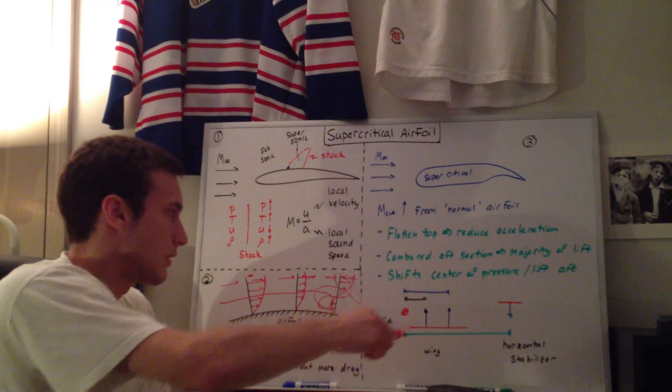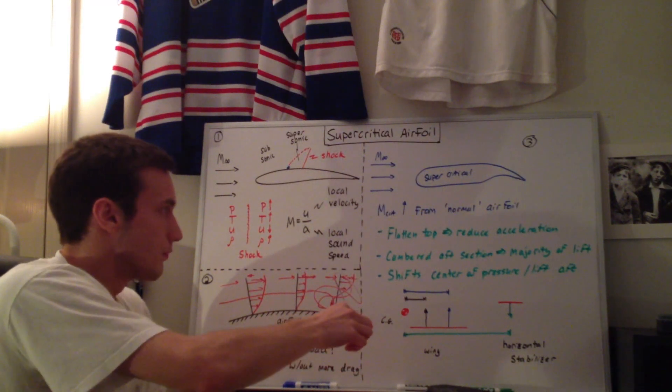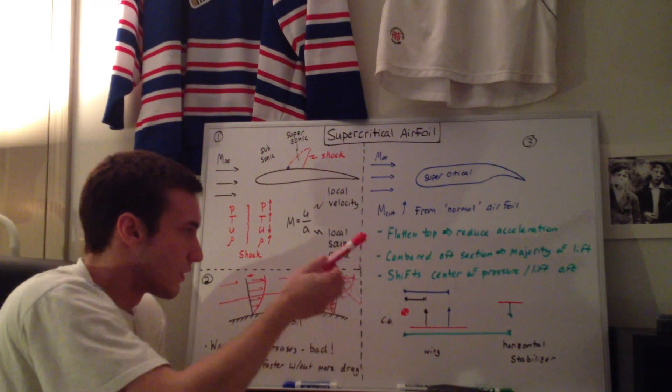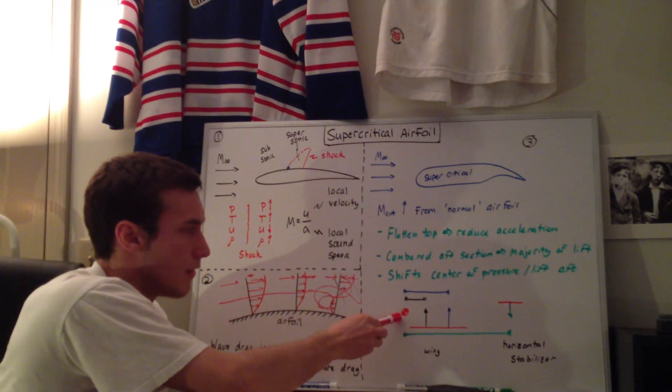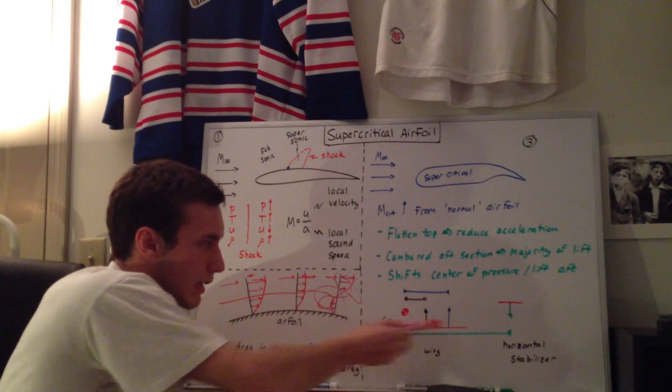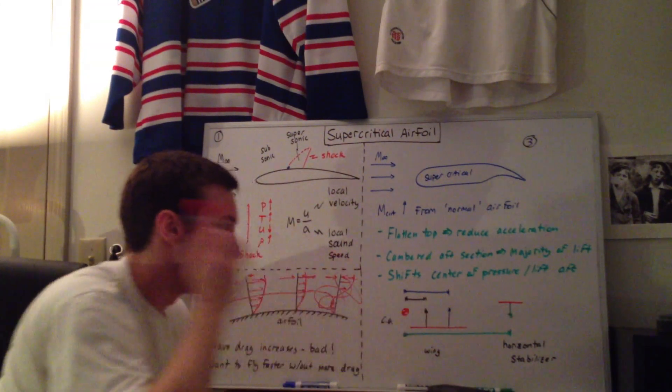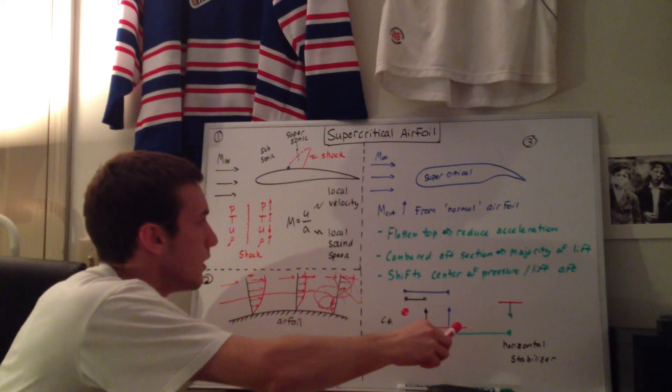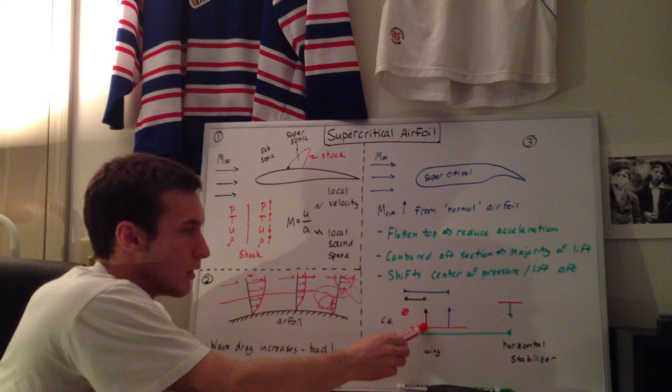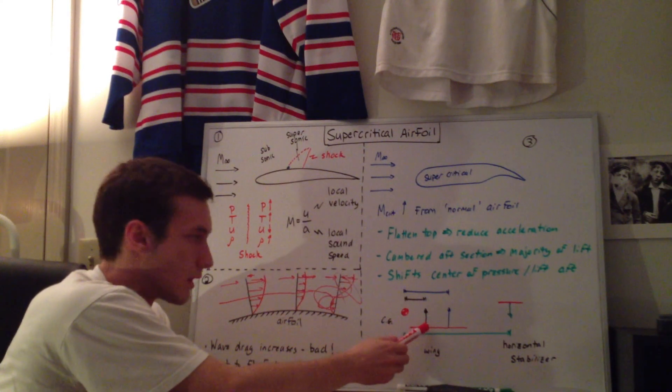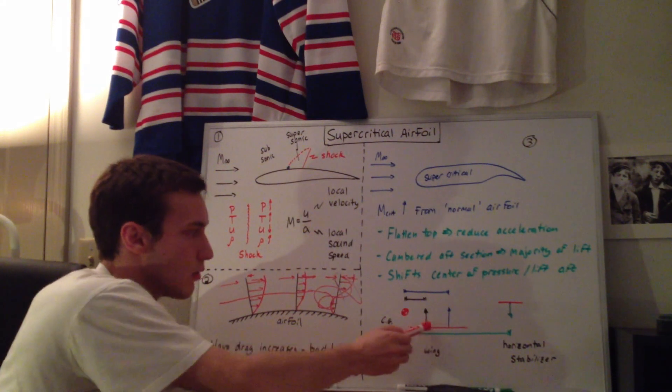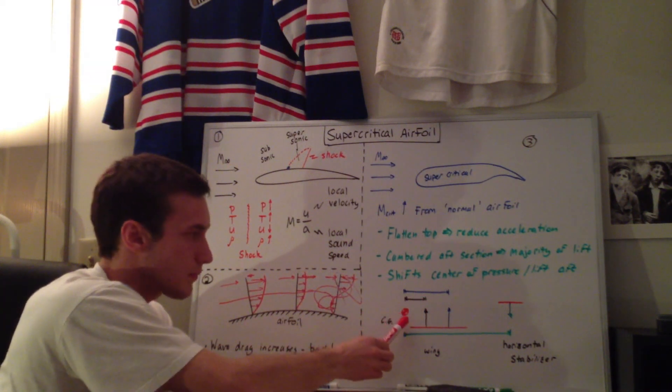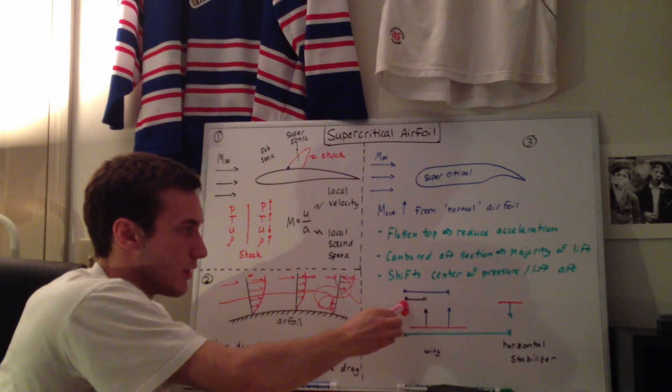So this is just, as a final note, this is kind of the impact that a supercritical airfoil has on the design of the plane. This is the side view of the plane, this is the center of gravity of the entire plane, this red line is the wing from the side view, and this is the tail from the side view, or the horizontal stabilizer from the side view. So in a normal wing, so I drew this black, I drew the resultant lift vector black. On a normal wing it'll be somewhere up here, and then that creates a moment about the center of gravity based off of this distance.